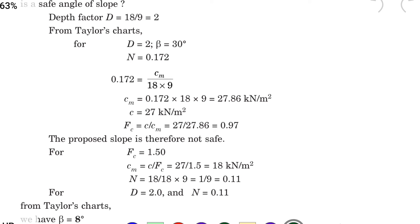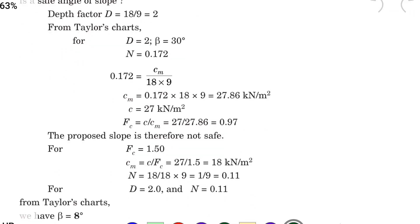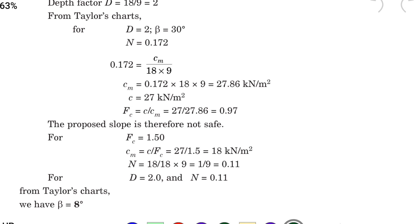So now C equal to 27 kN per meter square that is given, that is cohesion is 27 kN per meter square. So from the factor of safety FC equal to C by CM. So that is C is equal to 27 divided by 27.86 that is equal to 0.97.